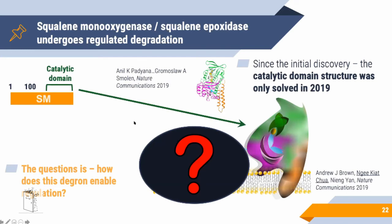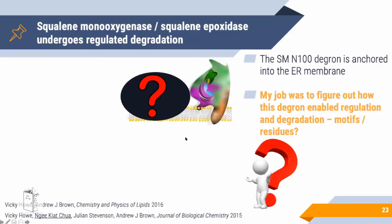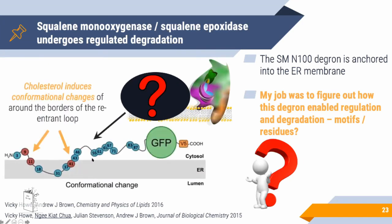Squalene monooxygenase has been around for decades, but it was only last year that someone solved the catalytic domain structure — still without the N100 domain, whose structure remains unknown. This is important because the N100 region regulates enzyme activity. Prior work showed that this degron is anchored into the ER membrane with a loop structure. My job was to figure out how this degron enables regulation — finding motifs and residues important for the process.